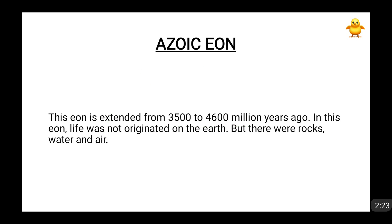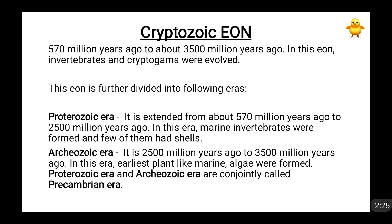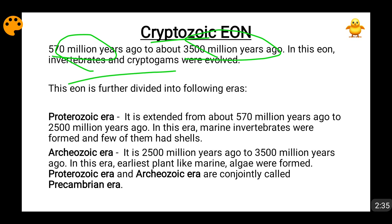At this point of time, life had not originated on Earth, but there was the presence of rocks, air, and water. After that comes the Cryptozoic Eon, which lasted from 570 million years ago to 3,500 million years ago. During this time, invertebrates and cryptograms were formed. This Cryptozoic Eon has been broken into two parts: the Proterozoic Era and the Archeozoic Era, also named Archeon.